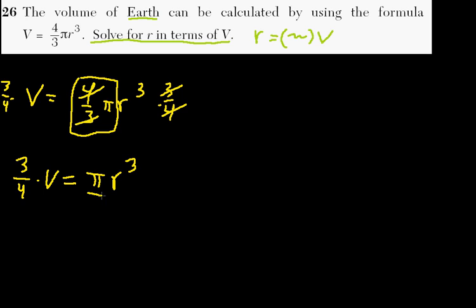Okay, now we've got to get rid of the pi, so we divide by pi, and dividing by pi is the same as multiplying one over pi. So now we have three over four pi times the volume equals r to the third.